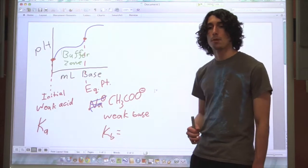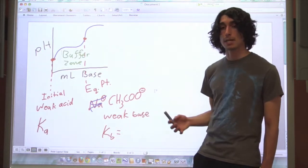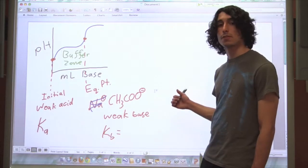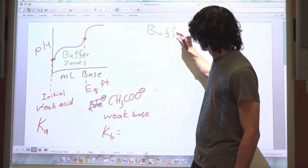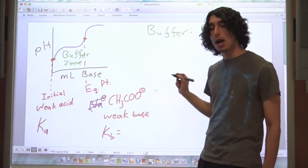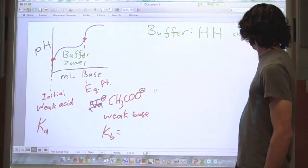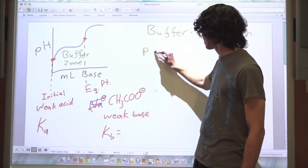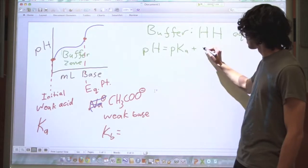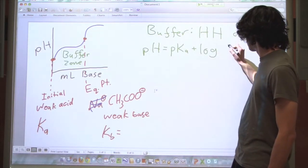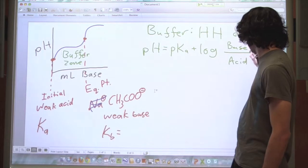So what is a buffer? A buffer is a solution that contains a weak acid and its conjugate base, or a weak base and its conjugate acid. A buffer resists change in pH. So whenever you have a buffer, the easiest way to solve these problems is with the Henderson-Hasselbalch equation, which looks something like this. It says that the pH is equal to the pKa plus the log of the base over the acid. And these are concentrations.